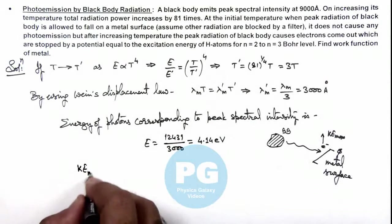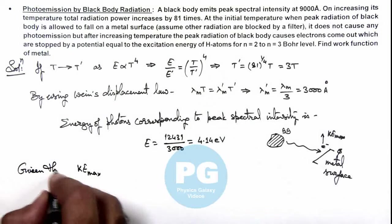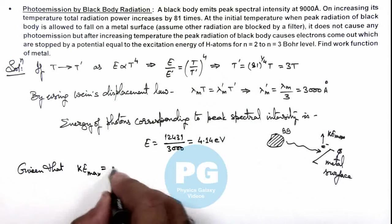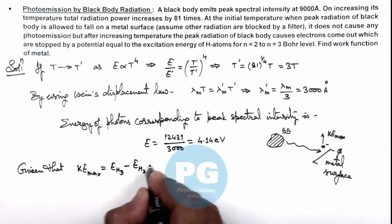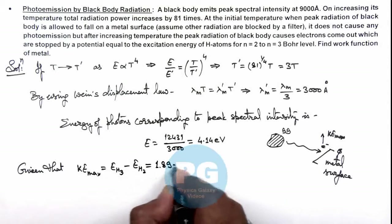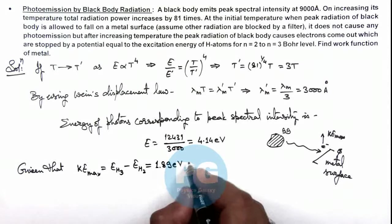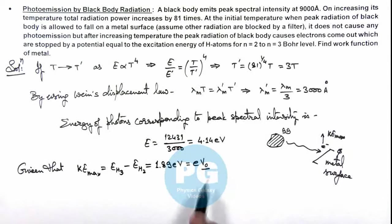We can use that it is given that KE max is equal to E of hydrogen in orbit 3 minus E of hydrogen in orbit 2, which we know is equal to 1.89 electron volts. So this must be equal to eV₀ where V₀ is the stopping potential. So here we can use the equation of photoelectric effect.